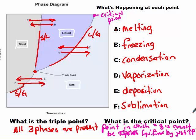The critical point is the point in which a gas cannot be liquefied by just increasing the pressure. The molecules have too much kinetic energy, they're moving too fast. You have to lower the temperature before it can turn into a liquid.